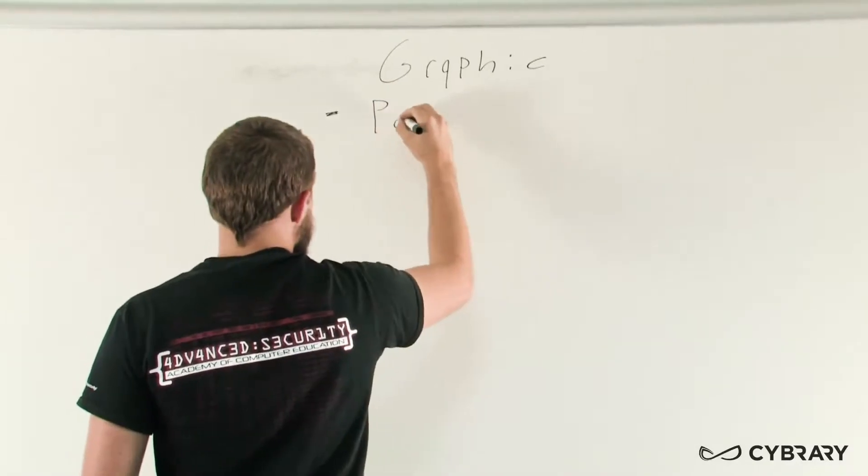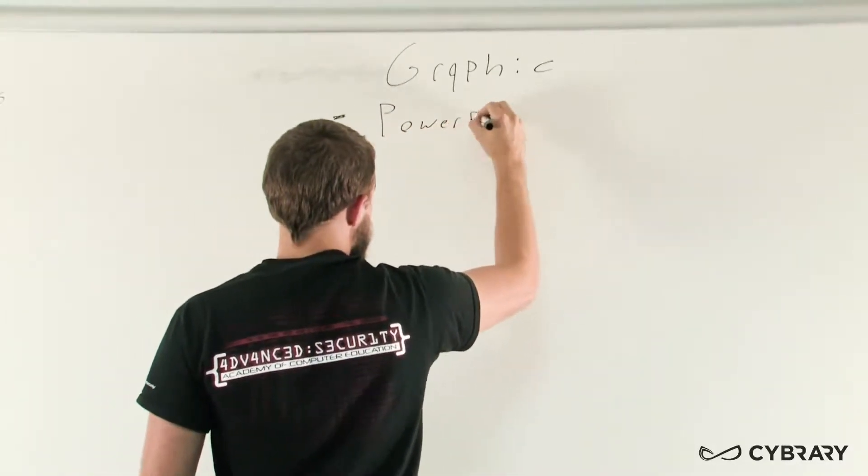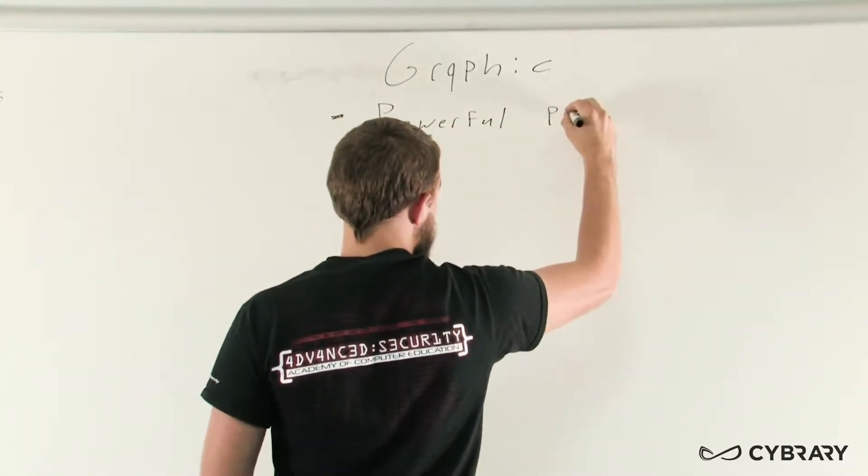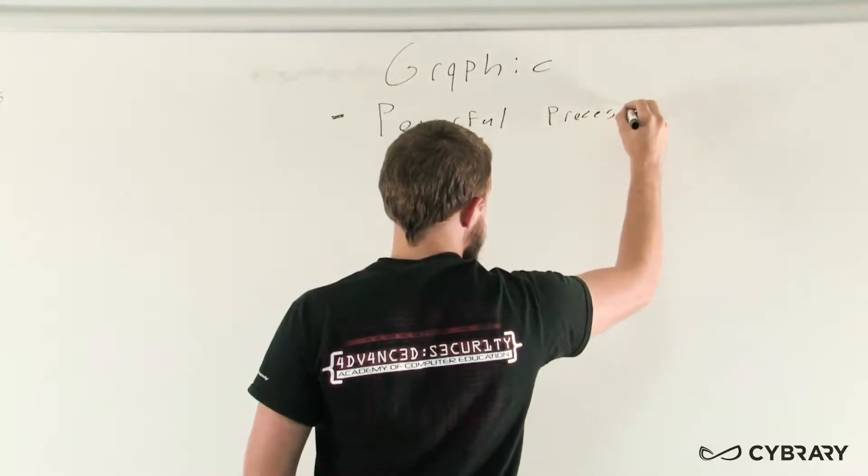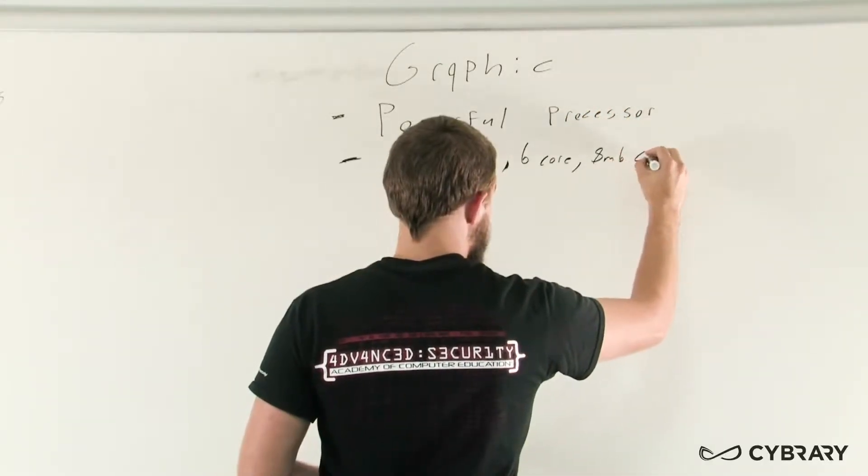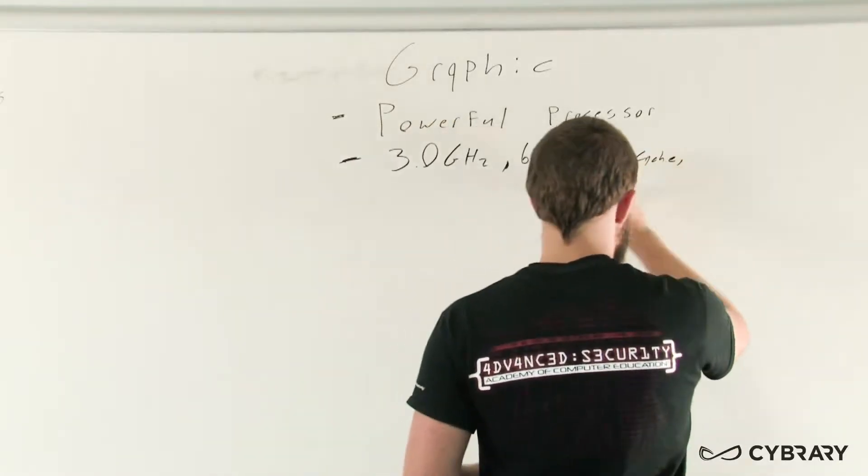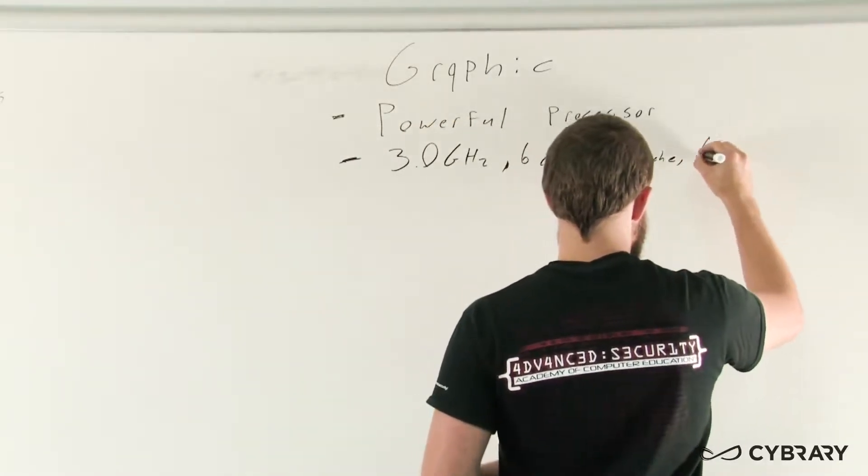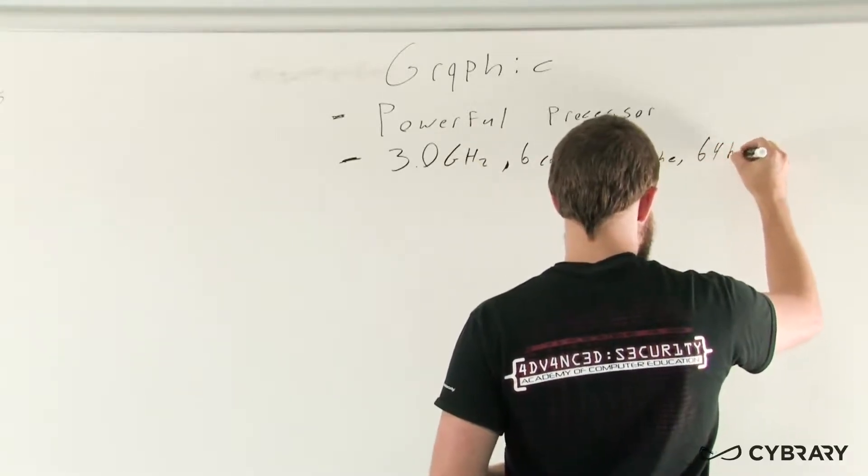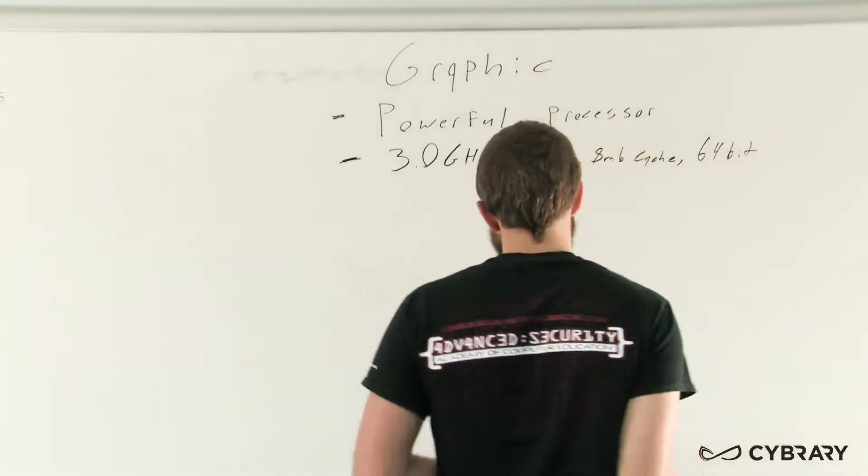The first thing we want to take a look at in a computer for our graphics computers is going to be a fast processor for rendering. We want a powerful processor running at 3.0 GHz or faster and has at least six cores and eight megabytes of total cache. And of course, we want a processor which supports 64 bits.